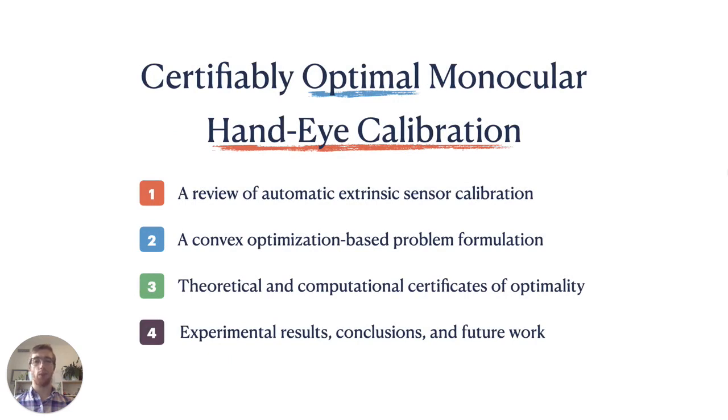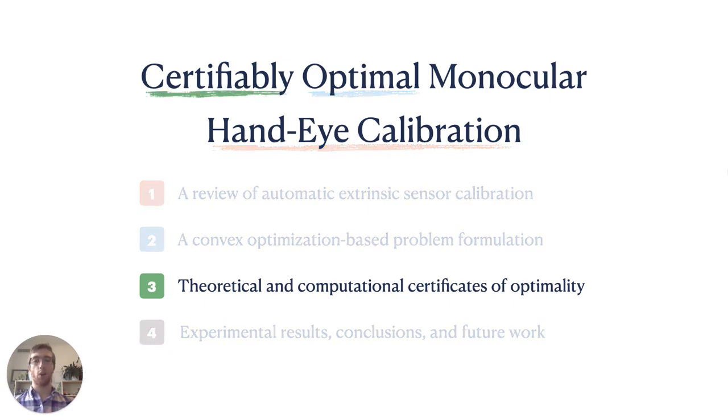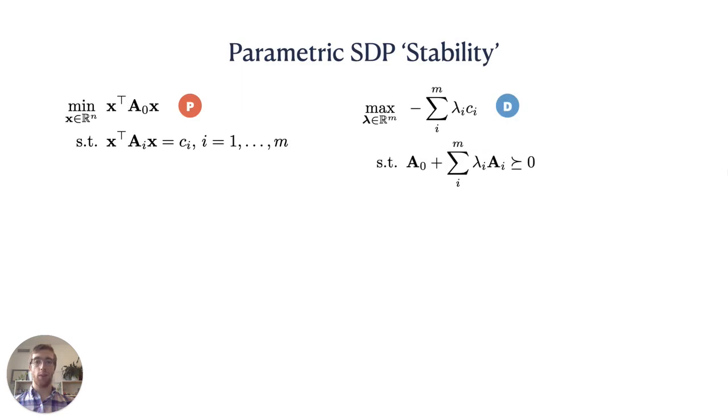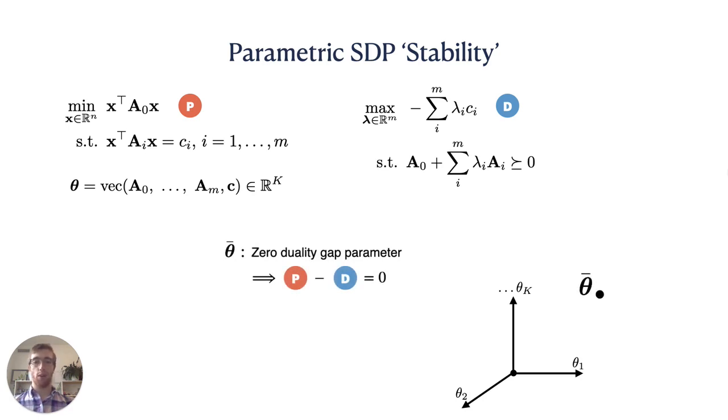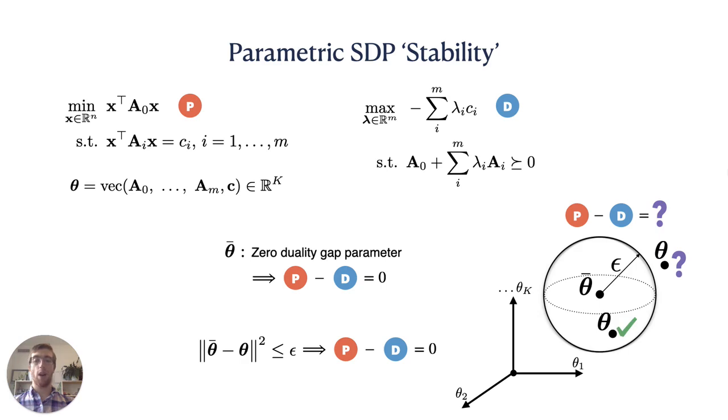We've successfully formed a semi-definite relaxation of our problem, but when is the duality gap zero? In other words, when are we able to extract a certifiably globally optimal solution to our primal problem from a dual solution? Let's return to the general QCQP and its dual SDP. We can think of the A matrices and a vector containing the C scalars as a parameterization theta of this pair of problems in some high-dimensional vector space. Consider a value theta bar for which we know that the duality gap is zero. We will investigate the local stability of theta bar by asking how far, in a Euclidean sense, another parameter theta can be from theta bar while still having zero duality gap. We will use results that prove the existence of an epsilon ball around theta bar within which all SDPs described by these parameters exhibit a zero duality gap.